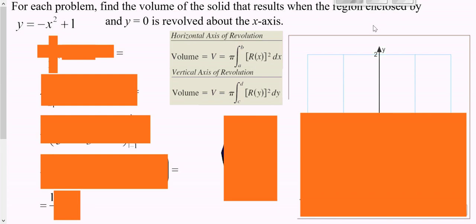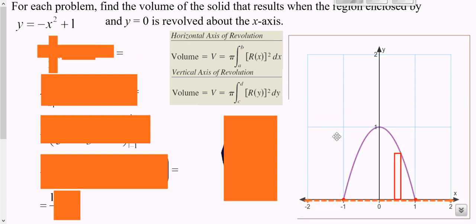We're going to continue looking at finding volumes of revolution. We'll start by graphing this — you should realize that this is a parabola that opens down because it's negative, shifted one unit up, and it's bounded by y equals zero, which is the x-axis. That's also what we're revolving around. Draw your parabola, put it into your y equals, make a table, plot your points, and you end up getting this parabola. We also have our axis of revolution.